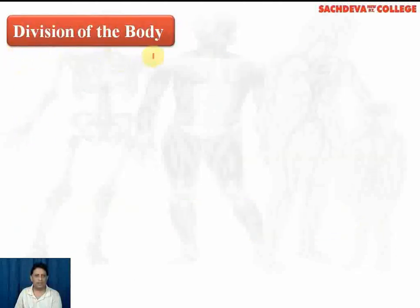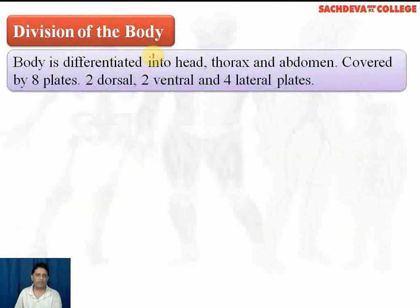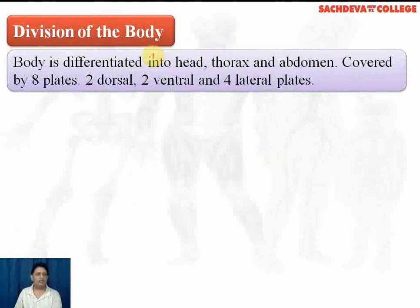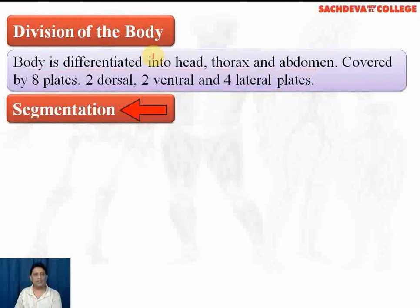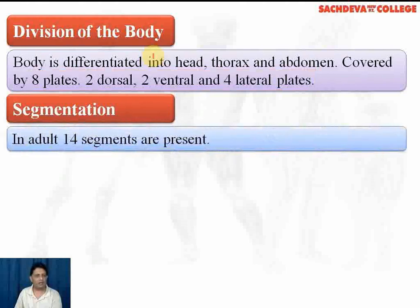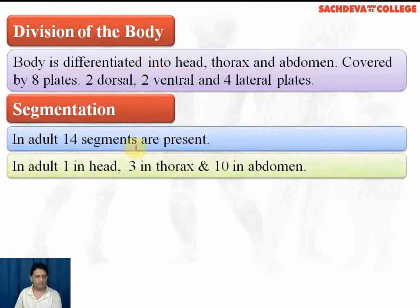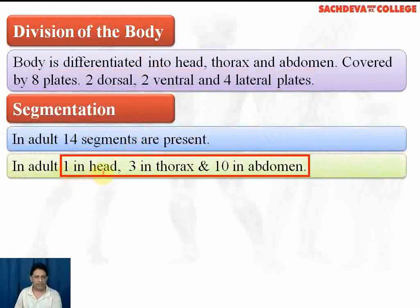The body is differentiated into head, thorax, and abdomen. The body is covered by 8 plates: 2 dorsal, 2 ventral, and 4 lateral plates. In the adult cockroach, a total of 14 segments are present — 1 in the head, 3 in the thorax, and 10 in the abdomen.